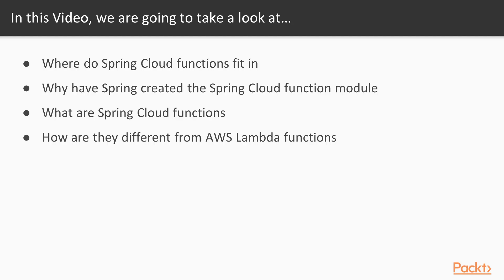We will cover where Spring Cloud Functions fit into the Cloud Abstraction layers, briefly covering the different types like Infrastructure as a Service, Container as a Service, Platform as a Service, and Functions as a Service. We will then look in more detail at what Spring Cloud Functions are, how they work, and how they are different to AWS Lambda Functions.